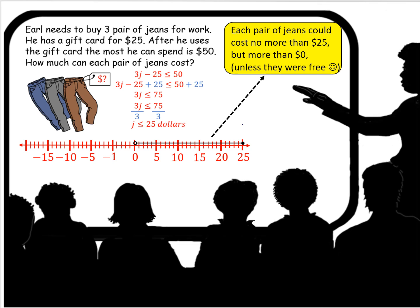So what we see is a closed circle on the 25, which means they could cost $25 each, and they could cost anything less than $25.